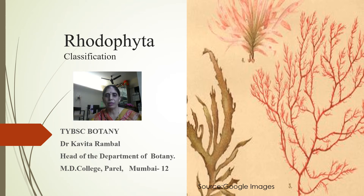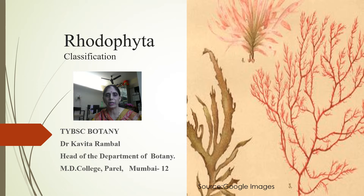Hi there students. We have already studied classification of algae into various divisions. Smith divided algae into 7 divisions, and one of those divisions is Rhodophyta. So now let us study the classification of Rhodophyta, the red algae.